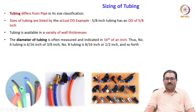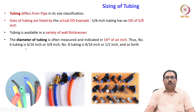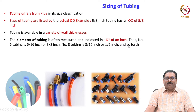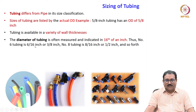The diameter of tubing is often measured and indicated in 16ths of an inch. For example, number 6 tubing is 6/16 inch or 3/8 inch. Similarly, number 8 tubing is 8/16 inch or 1/2 inch, and so forth.